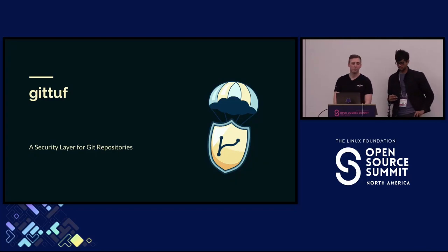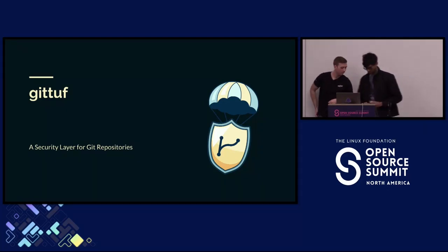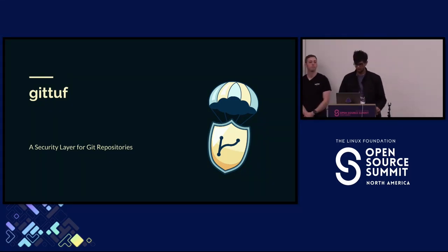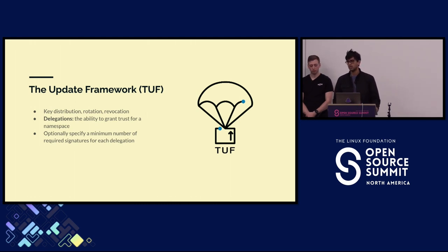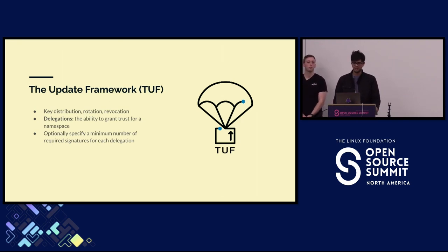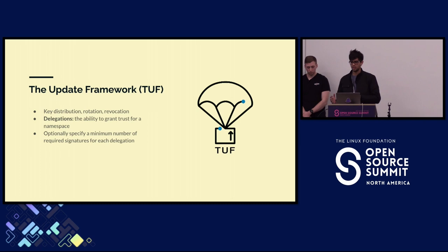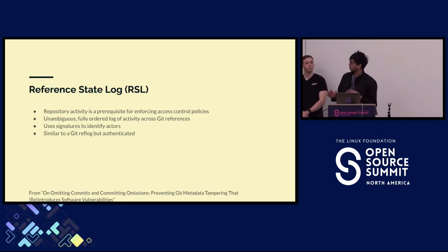That brought us to the idea of GitTuff. The Update Framework — TUF — is a project over at the CNCF focused on how you securely distribute artifacts from usually a package repository or container image registry. In solving the problem of securely distributing artifacts, it gets a lot of things right in the context of handling key distribution, rotation, and revocation. It also has the very powerful semantic of the ability to delegate trust from one set of people to another without them having to share keys. The other thing to understand about GitTuff is this idea of a reference state log.